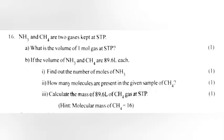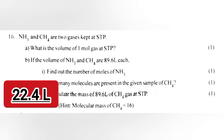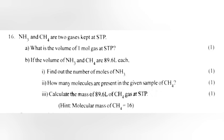Question 16: NH3 and CH4 are two gases kept at STP. 16a: What is the volume of 1 mol gas at STP? Answer: 22.4 liter. 16b: If the volume of NH3 and CH4 are 89.6 liter each, find out the number of moles of NH3. How many molecules are present in the given sample of CH4? Calculate the mass of 89.6 liter of CH4 gas at STP.